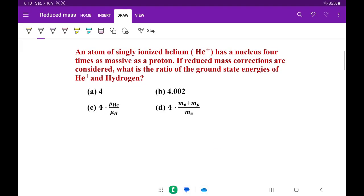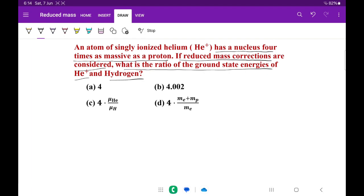Now the next question. An atom of singly ionized helium has a nucleus four times as massive as a proton. If reduced mass corrections are considered, what is the ratio of the ground state energies of helium and hydrogen? This problem is given numerous times in many SET exams - West Bengal SET, Karnataka SET, and many MSc entrance exams. Repeatedly, this type of question comes. What do we need to find? We have to find the ratio of the ground state energies of helium plus and hydrogen.